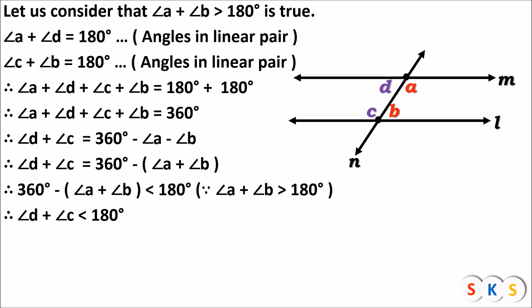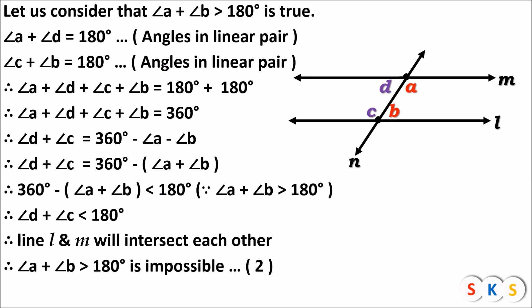So angle D and angle C are interior angles and the sum of these two angles is less than 180 degrees. According to Euclid's postulate, if the sum of any two interior angles is less than 180 degrees, then the lines will intersect each other. But it is given that line L and line M are parallel. Therefore this consideration is impossible — angle A plus angle B greater than 180 degrees is impossible. This is equation number two.